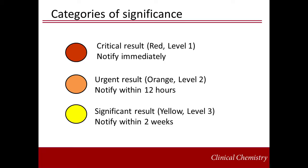In this example, any test labeled as red would require immediate notification, while urgent results — the orange tier — would allow reporting up to 12 hours, and significant but non-urgent, or yellow results, may be called within two weeks.